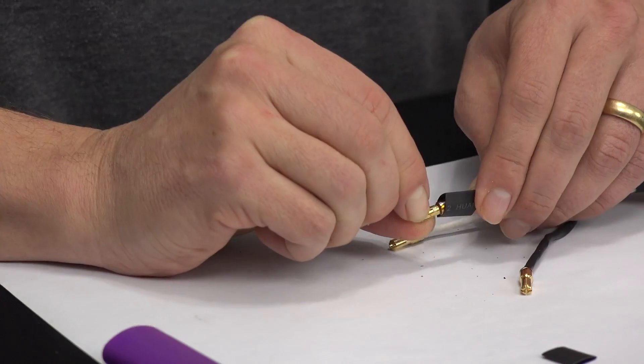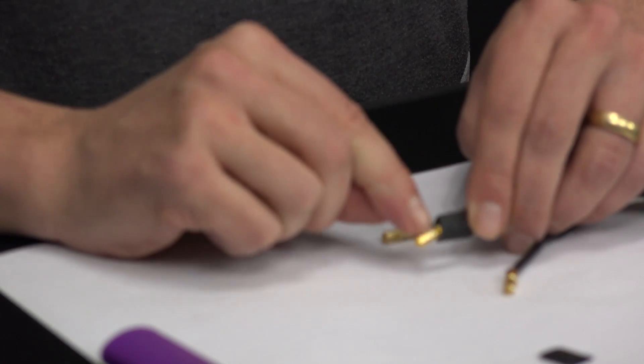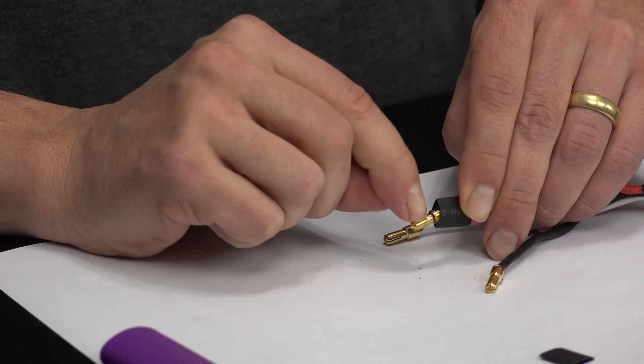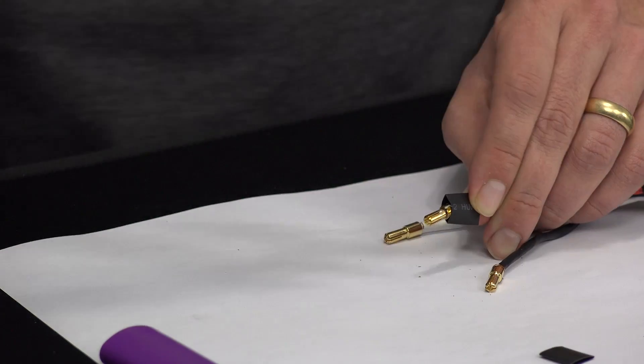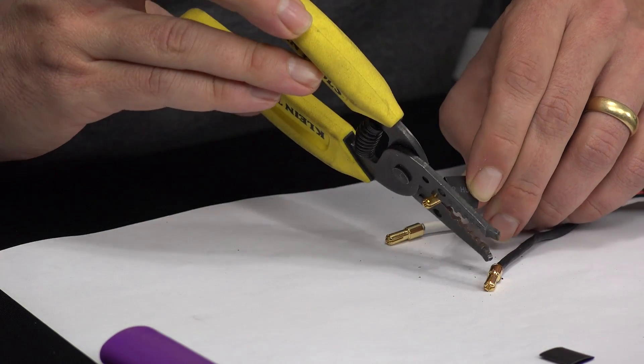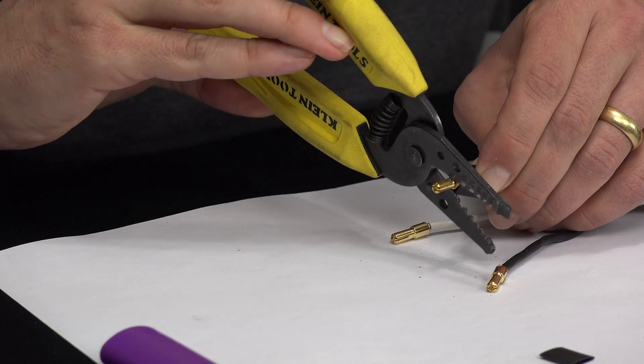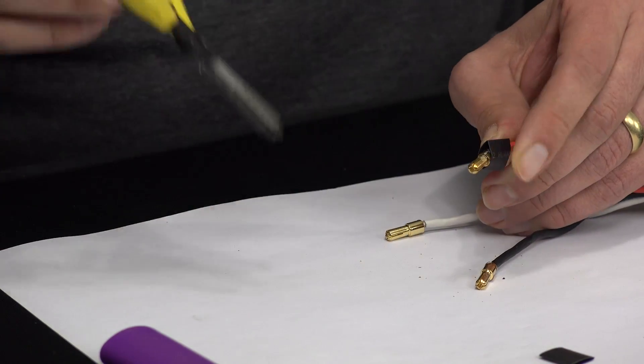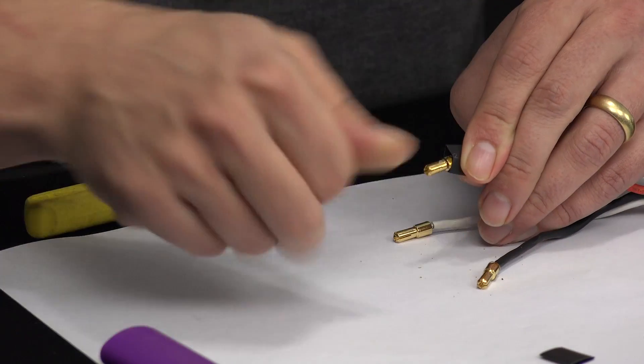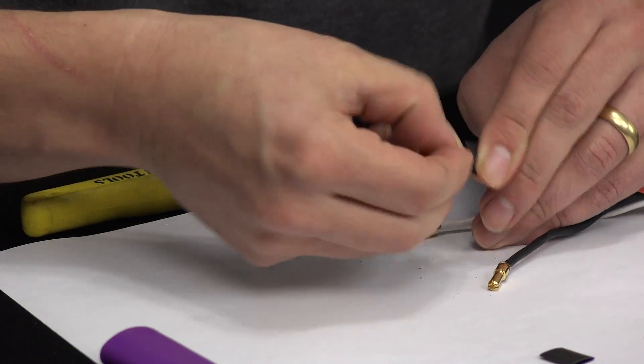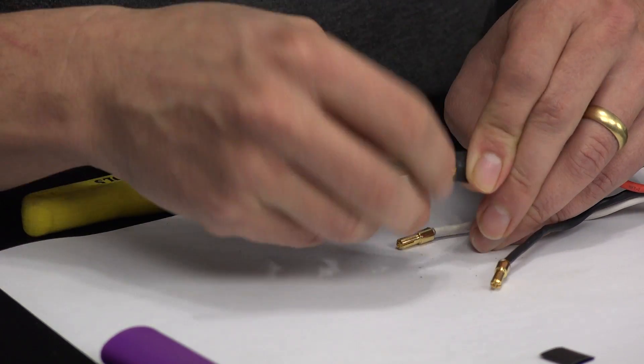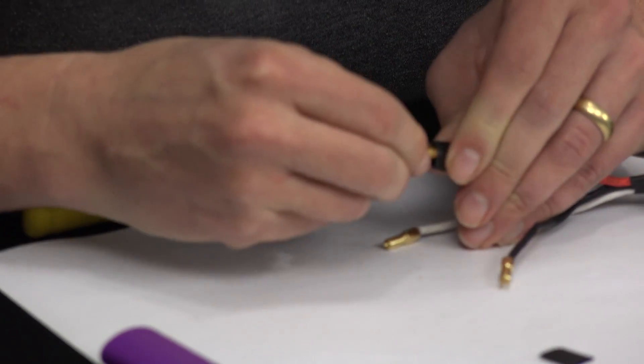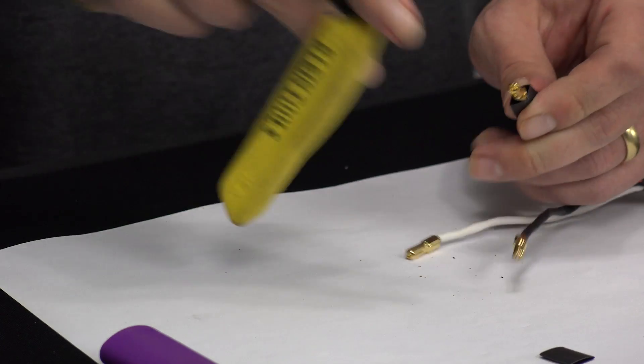But this is what you want to avoid is getting solder on the actual plug body where it slides in. And more than likely, I can just take these cutters and kind of scrape it off. A little sideways action. There we go. Yep. And that should be fine as long as it doesn't get down into the little slots. If you wick some solder into the slots, you're done. Your plug will not go together. That's pretty much, I mean, it happens.